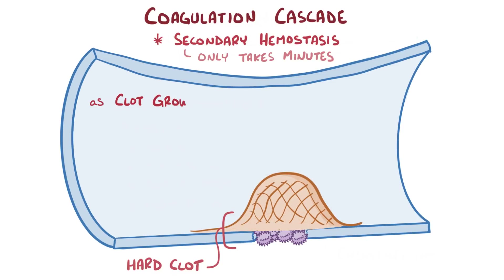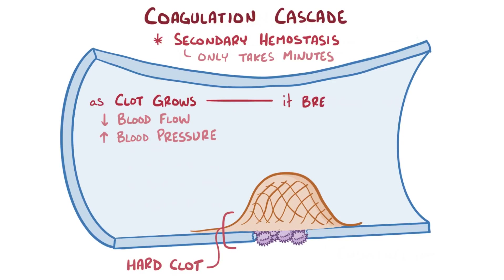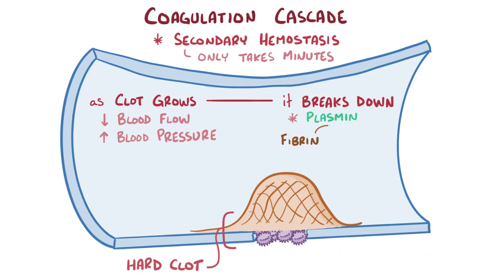As the clot grows in size, it limits the amount of blood able to pass by, and pressure in the vein increases. Usually the clot might start naturally breaking down. For example, enzymes like plasmin break down fibrin into fragments called D-dimers.